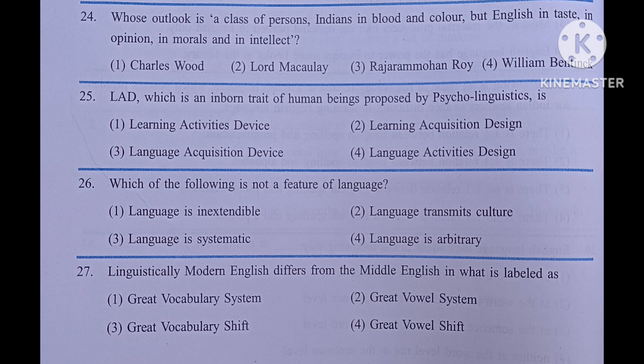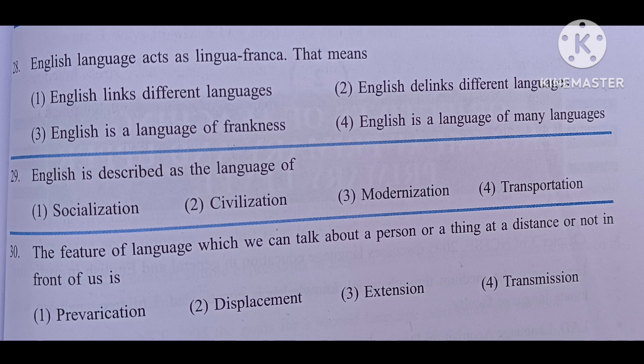Linguistically, modern English differs from middle English in what is labeled as: number one, great vocabulary system; number two, great vowel system; number three, great vocabulary shift; number four, great vowel shift. The answer is great vocabulary shift.